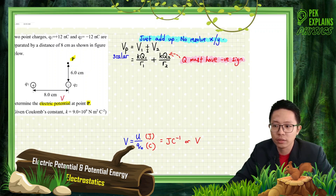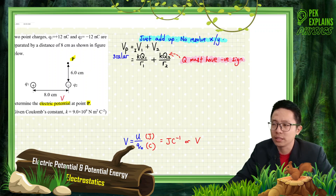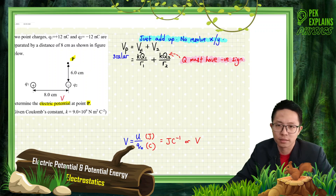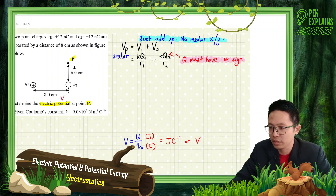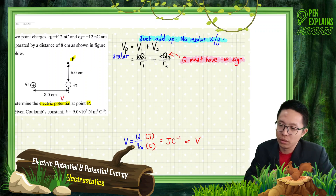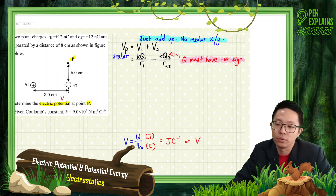Scalar quantity is just like numbers without direction — 2 plus 2 becomes 4, 3 plus 4 becomes 7, just add up. No direction, no need to draw vectors. So the formula for potential is KQ/R plus KQ/R.